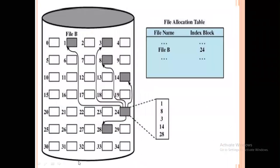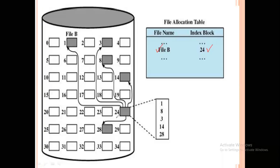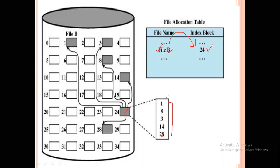Let's see the diagram. Here is file B, and its index block is at location 24. Meaning, block 24 contains all the pointer information for the file, and the other blocks are stored at the locations referenced from there. Block 24 shows: 1, 8, 3, 14, and 28 — meaning the 5 file blocks are stored at these 5 locations. The index contains this information at block number 24.